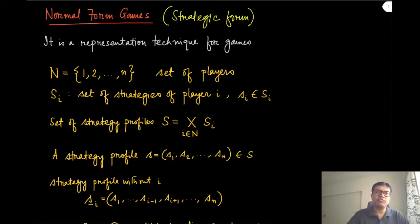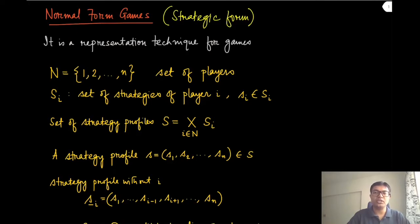Strategic form or normal form games are most appropriate to represent games which are of one round. The moment you pick your actions, the outcomes are realized and you get your utilities. One example of such a one-shot game was the neighboring kingdoms dilemma that we discussed in the very first lecture.